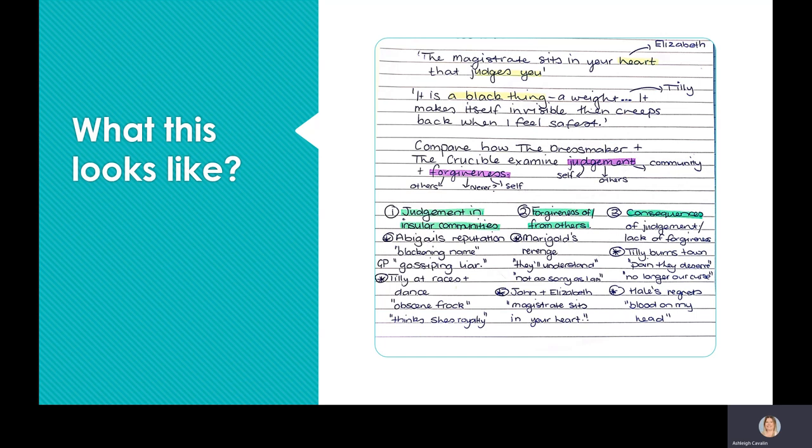Lastly I'm going to challenge the topic a little bit and I'm going to talk about the consequences, so the consequences of judgment overall or what happens if there is a lack of forgiveness. So looking at Tilly burning down the town, about the pain that they deserve and no longer having a curse, but also contrasting that with Reverend Hale's regrets about blood on his head. So from there I think I would be able to write a pretty compelling essay. Again, it's important the key features: unpack, get your topic sentences, get your evidence and get your quotes please.